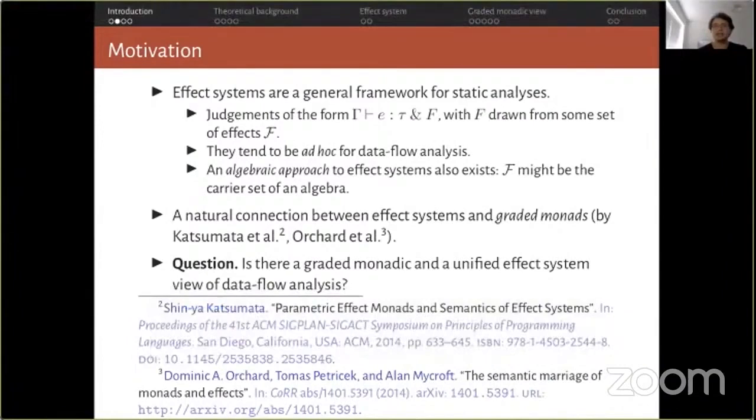They were first introduced by Gifford and Lucassen in the context of concurrent programs without data races. A type and effect system uses judgments of the form gamma entails E is of type tau with effect f, where f is a representation of an effect drawn from some set of effects here denoted by a calligraphic f. The simplest effect systems might use a set of memory locations as the effect of an expression. It is not surprising that various effect algebras and even just type systems have been developed for data flow analysis, though mostly in a very ad hoc way and not unified.